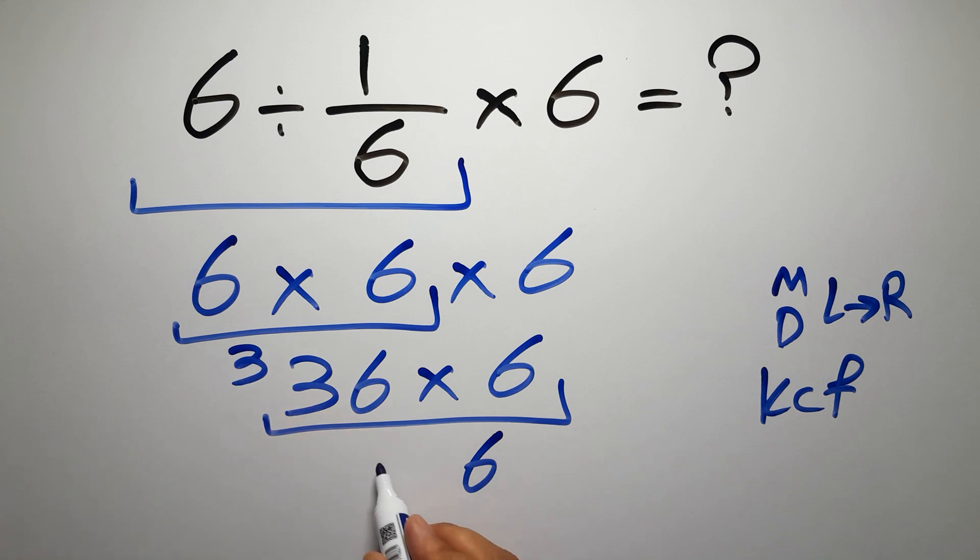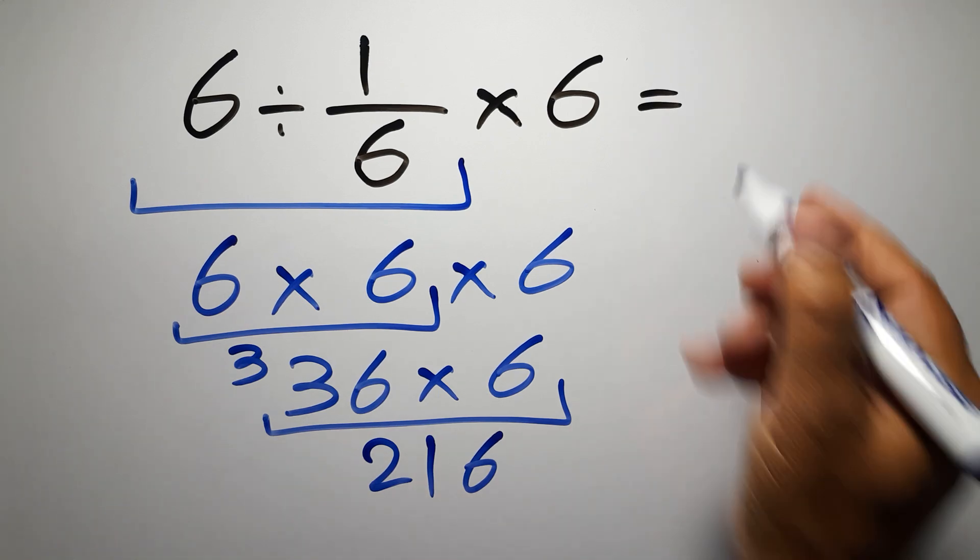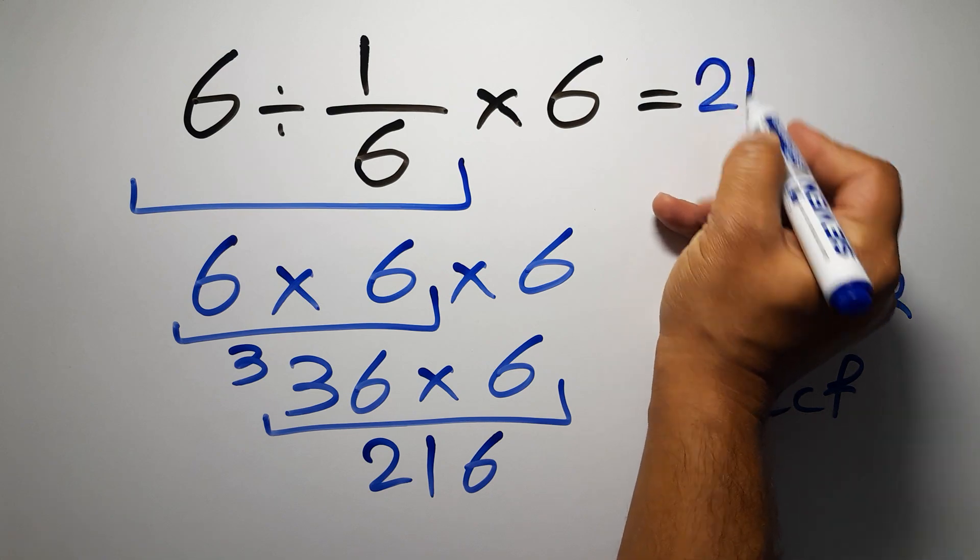18 plus 3 gives us 21, so we have 216. This is our final answer to this problem. The correct answer is 216.